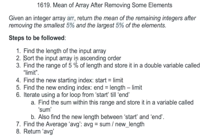First we have to find the length of the array, then sort the array in ascending order using Arrays.sort. We have to remove the smallest five percent and the largest five percent of the elements, so let's calculate five percent of the length using the formula: 5/100 * length, and store it in a double variable called limit. Instead of removing elements, we can ignore both ends and place two new pointers — start and end — and between those two pointers find the sum, then divide it by the new length to get the average.